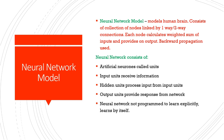A neural network model is a way of using A.I. It is a model of the human brain that consists of a collection of nodes linked by one-way and two-way connections. Each node will calculate a weighted sum of inputs and then provide an output — this is where backward propagation is used. A neural network consists of artificial neurons called units. Input units receive information. A hidden unit will process the input that the input unit holds. And then an output unit will provide a response.